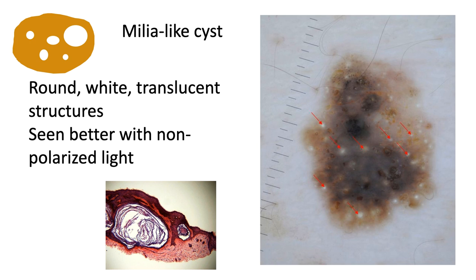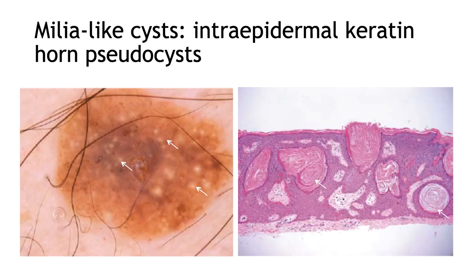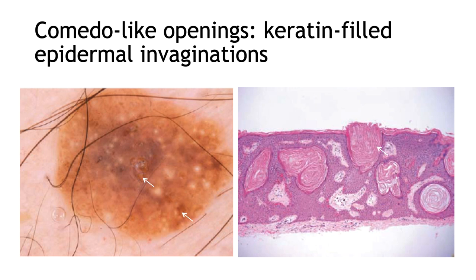The milia-like cysts are round, white, translucent structures that are better seen with non-polarized light — these white structures have also been called 'stars in the sky.' The comedone-like openings are brown, oval, keratin-filled structures. It's important to recognize both, because their histopathologic correlation is very similar: milia-like cysts correlate with intraepidermal keratin-filled horn pseudocysts, and comedone-like openings are keratin-filled epidermal invaginations that are open to the outside. Essentially they are the same structure, but one is enclosed in the epidermis and the other is open to the air.